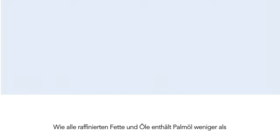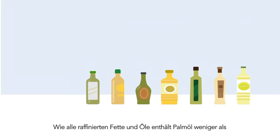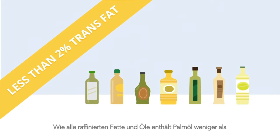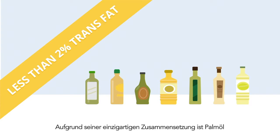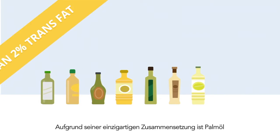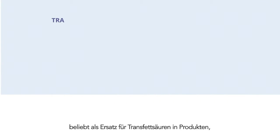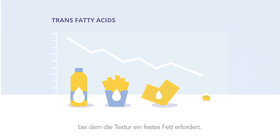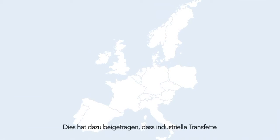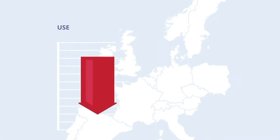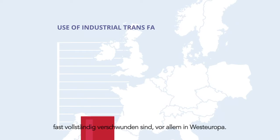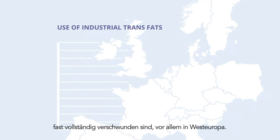Like all refined fats and oils, palm oil contains less than 2% trans fatty acids. Due to its unique composition, palm oil is widely used to replace trans fatty acids in products where the texture coming from a solid fat is required. It has contributed to the almost complete disappearance of industrial trans fats, specifically in Western Europe.